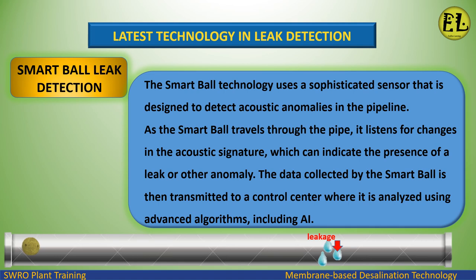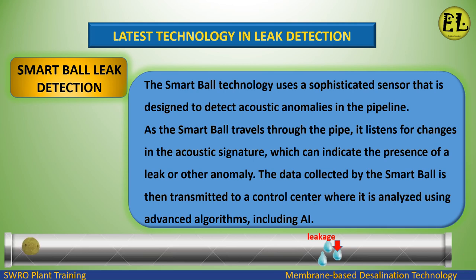Smart Ball Leak Detection technology uses a sophisticated sensor designed to detect acoustic anomalies in the pipeline. As the smart ball travels through the pipe, it listens for changes in the acoustic signature which can indicate the presence of a leak or other anomaly. The data collected by the smart ball is then transmitted to a control center where it is analyzed using advanced algorithms, including AI.